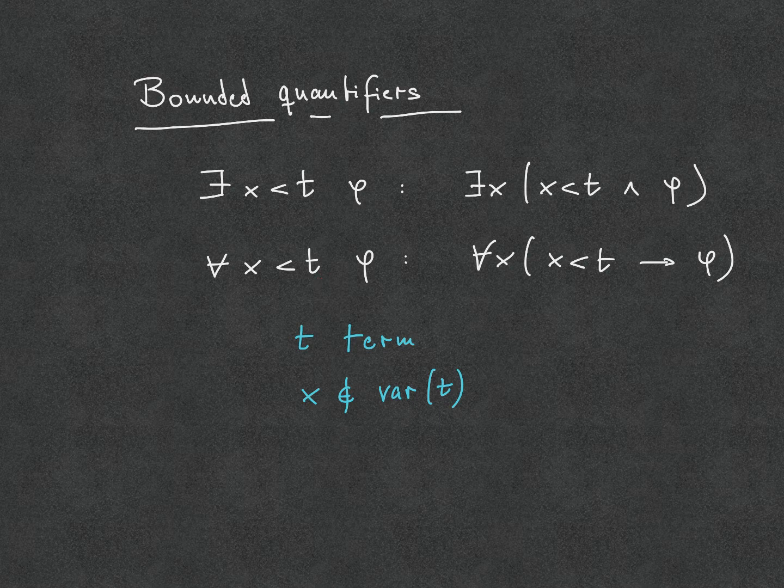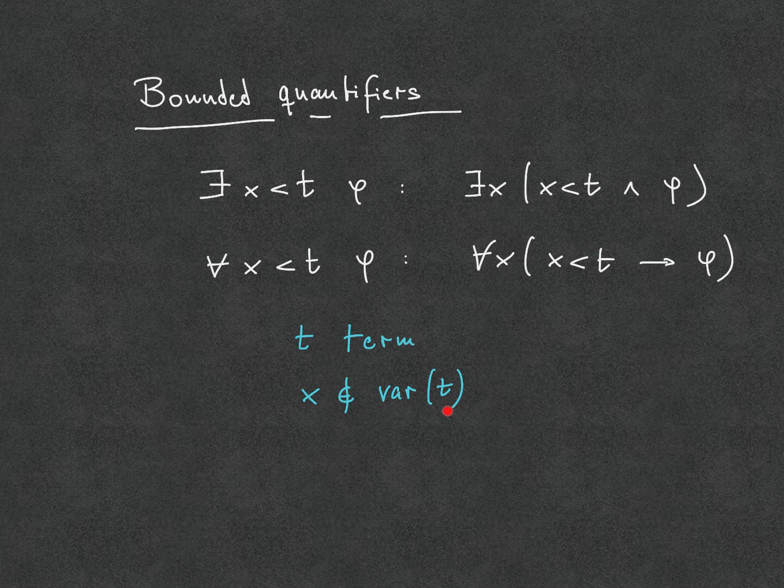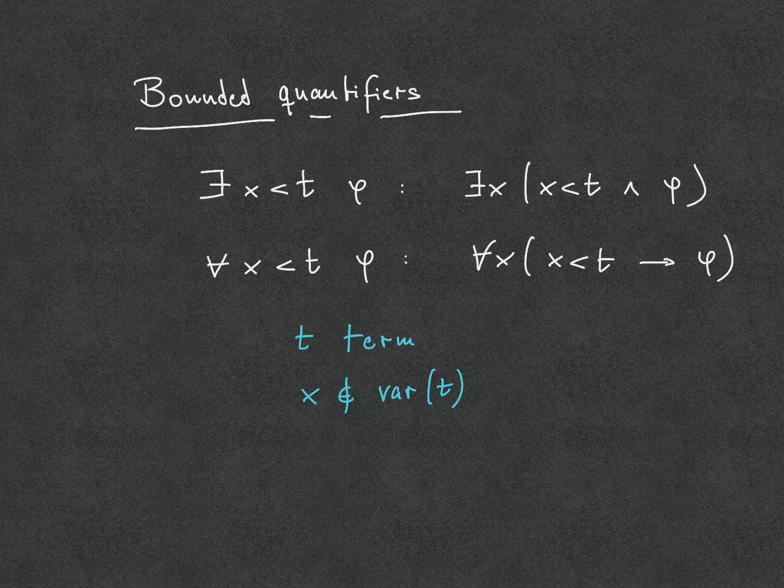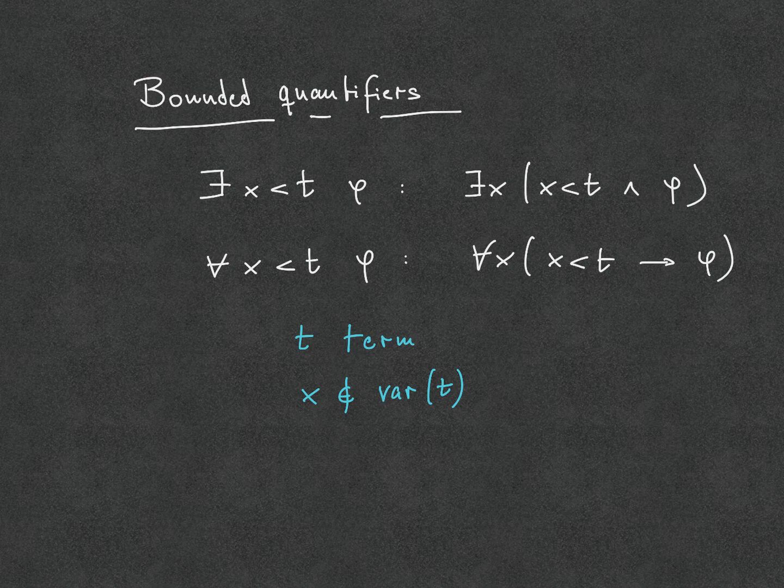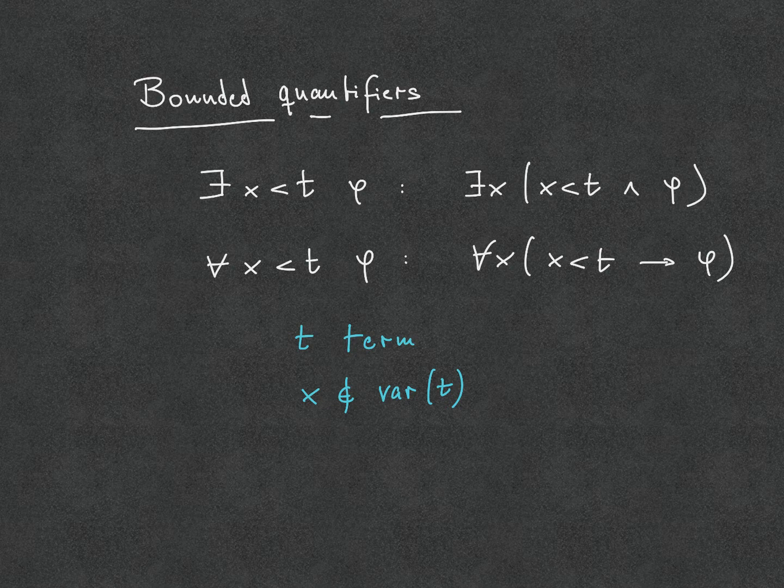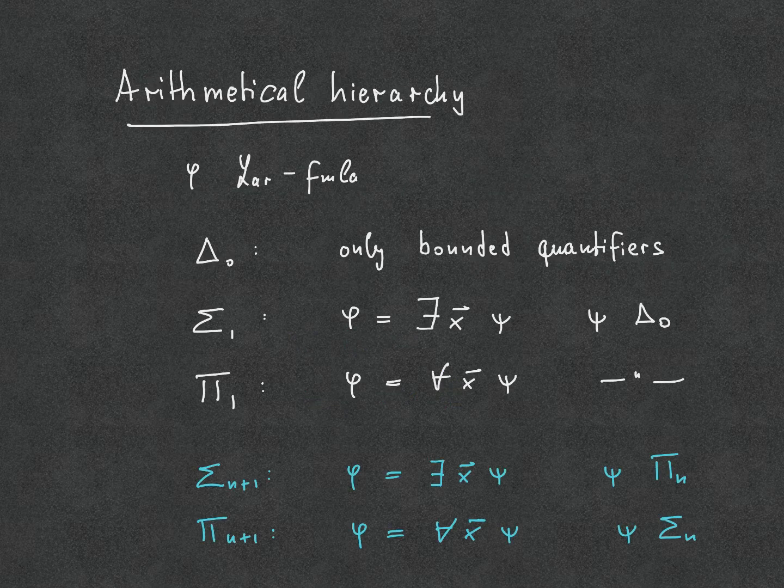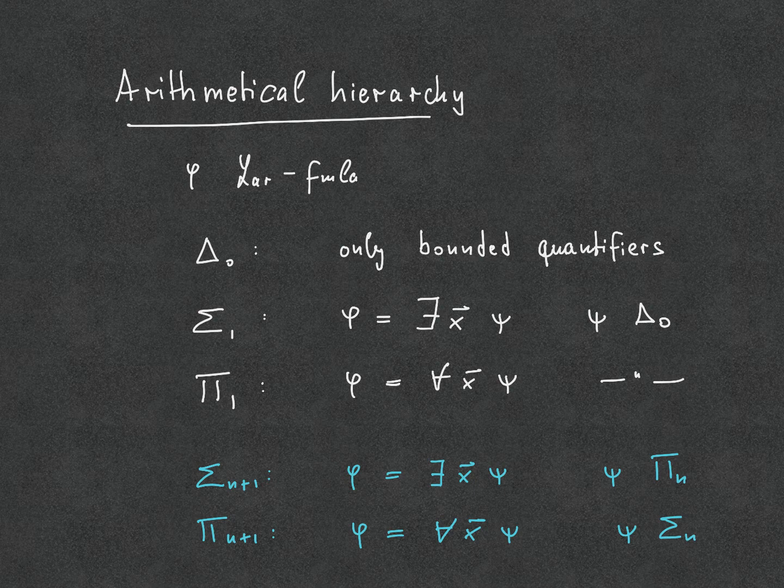Here, of course, t is a term, and it's also important that x is not among the variables of t. Similar to the case of primitive recursion, the idea of bounded quantifiers is that they are very limited in expressiveness, which in turn results in the predicates that they define or describe being rather simple.